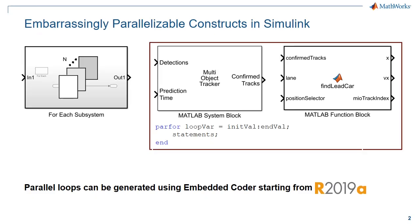There are several embarrassingly unparallelizable constructs in Simulink, which are good candidates to generate loops that can run in parallel. One of them is the for-each subsystem, where by Simulink semantics, operations on differing input data can be processed in parallel. The other is parfor in MATLAB blocks, which can be considered as a hint that those loops can run in parallel.